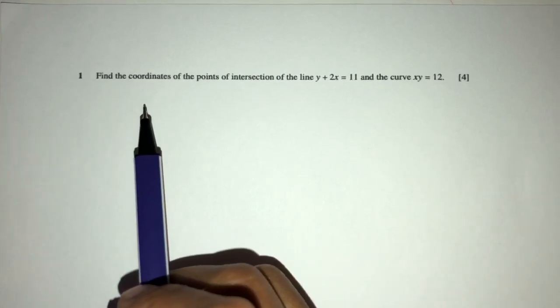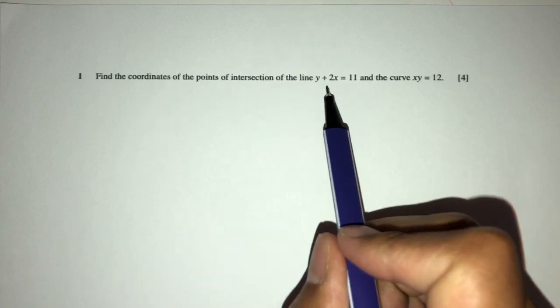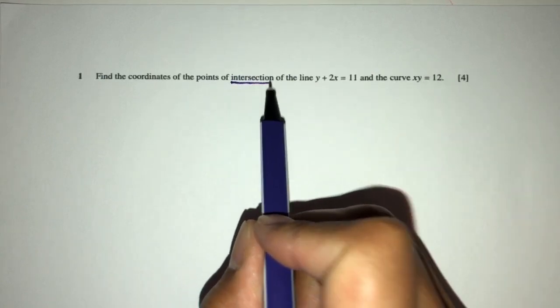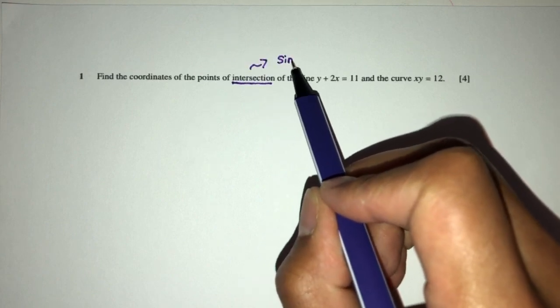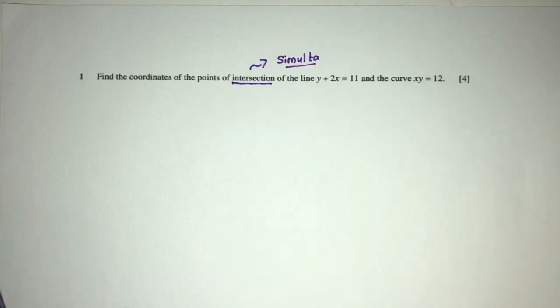Here we have to find the coordinates of the points of intersection of the line and the curve. As you can see, here we have intersection. Usually that will lead to solving simultaneous equations.